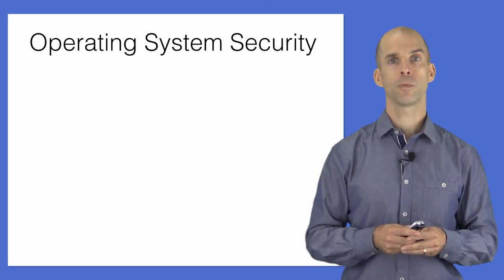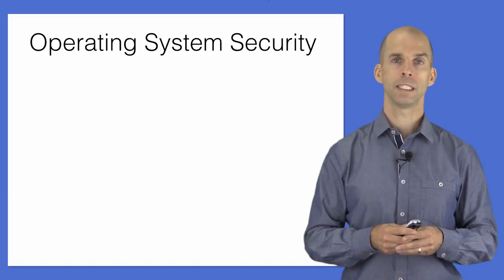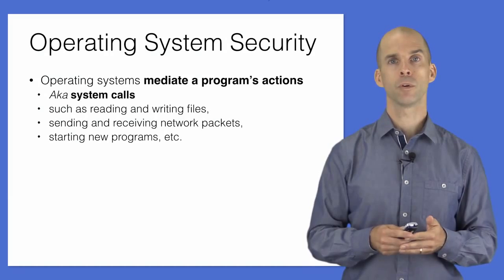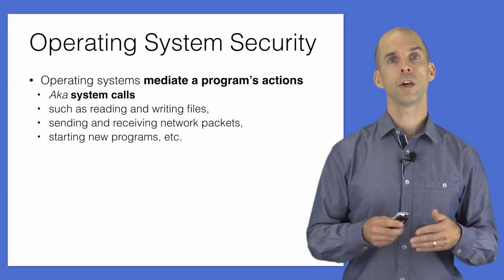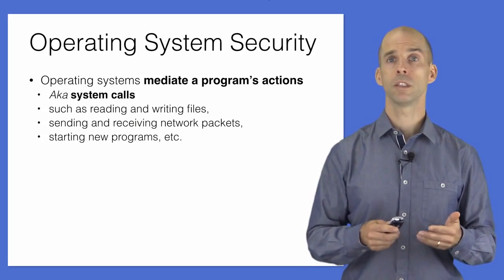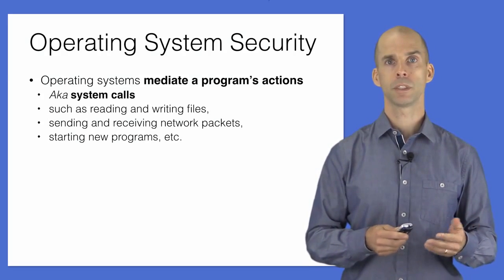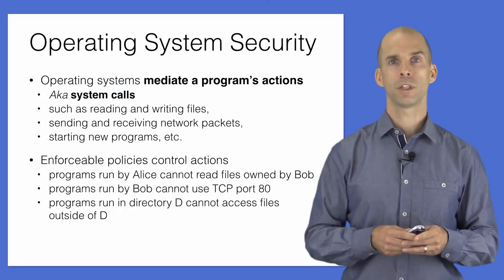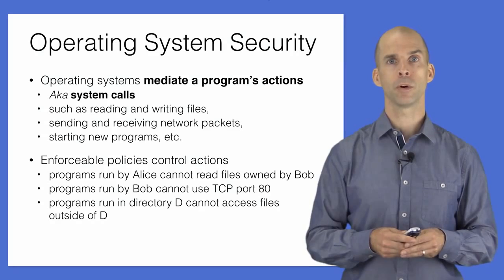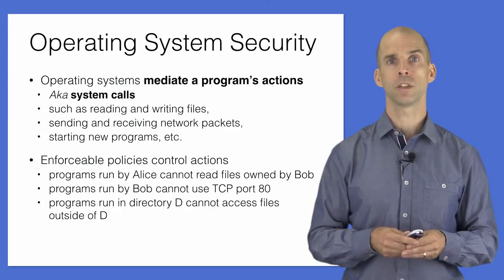A first example of security enforcement is the operating system. When computer security was growing as a field in the early 1970s, the OS was the focus. The OS cares about what the program does — its actions as it executes, called system calls, which include reading or writing files, sending network packets, and running new programs. The operating system enforces security policies that limit the scope of system calls. For example, the OS can ensure Alice's programs cannot access Bob's files, or that untrusted user programs cannot set up trusted services on standard network ports.